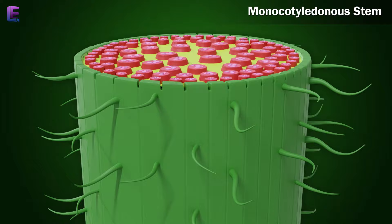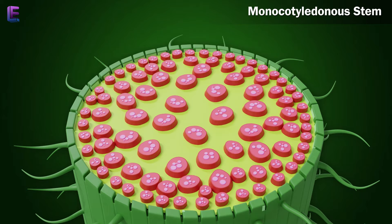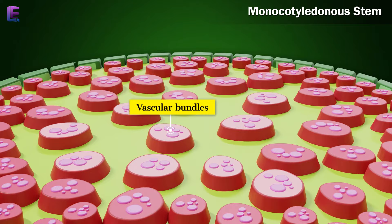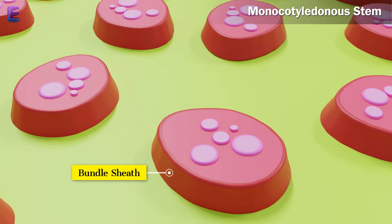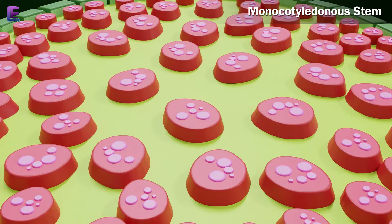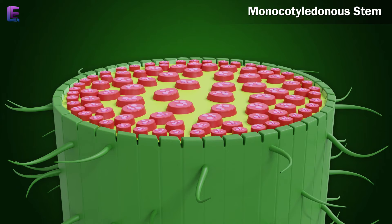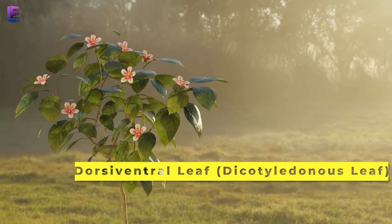Monocotyledonous Stem: The monocotyledonous stem has a sclerenchymatous hypodermis and a large number of scattered vascular bundles. It contains a large amount of parenchymatous ground tissue. The vascular bundles are surrounded by a sclerenchymatous bundle sheath. Vascular bundles are conjoint and closed. Water-containing cavities are present within the vascular bundles.